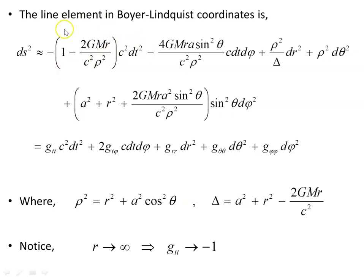As r approaches infinity, rho squared is dominated by r², which forces the off-diagonal terms towards zero, and we're left with just −1 for g_tt. The same applies to the other components, and we approach the Minkowski metric of flat spacetime asymptotically.